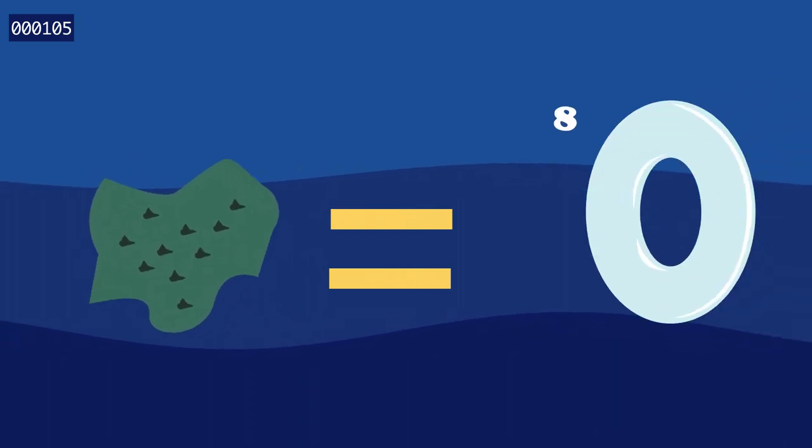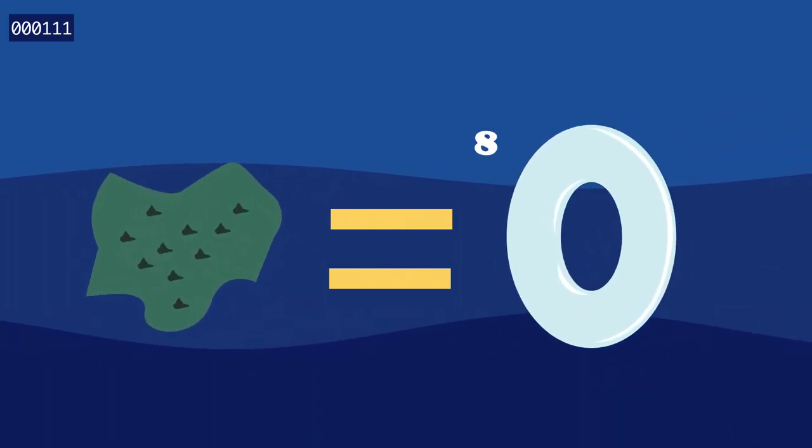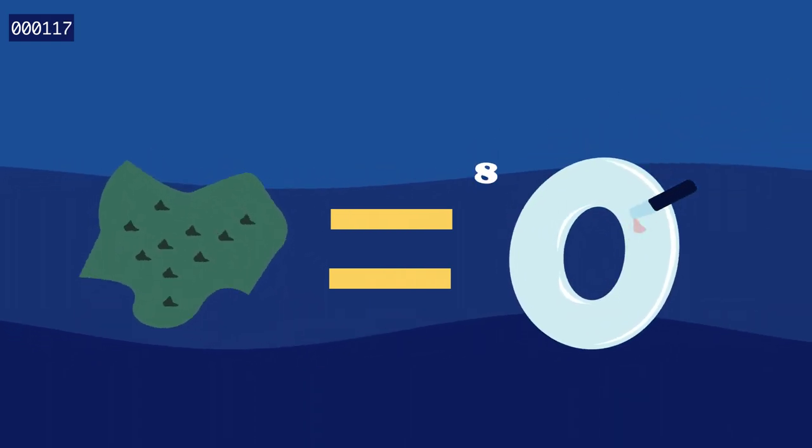One being algae, that creates oxygen for 70% of the earth. We're killing oxygen?